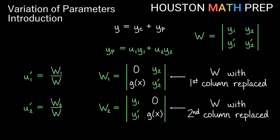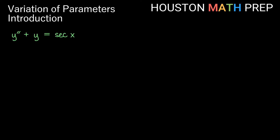In the variation of parameters process, we find three Wronskians total: the original Wronskian of y1 and y2, and then W1 and W2, found by replacing one column at a time. Let's work through an example so you can see how the method works, and then we'll give a summary at the end.